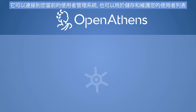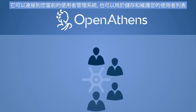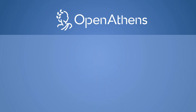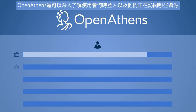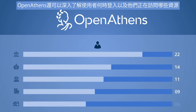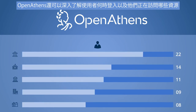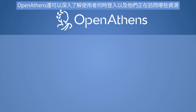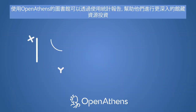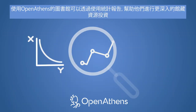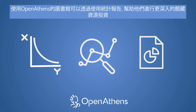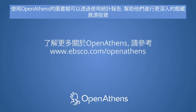It can link to your current user directory system or be used to store and maintain your user list. OpenAthens also offers insight into when your users are logging in and which providers they are accessing. Libraries using OpenAthens have access to usage reports that help them make informed resource investments.